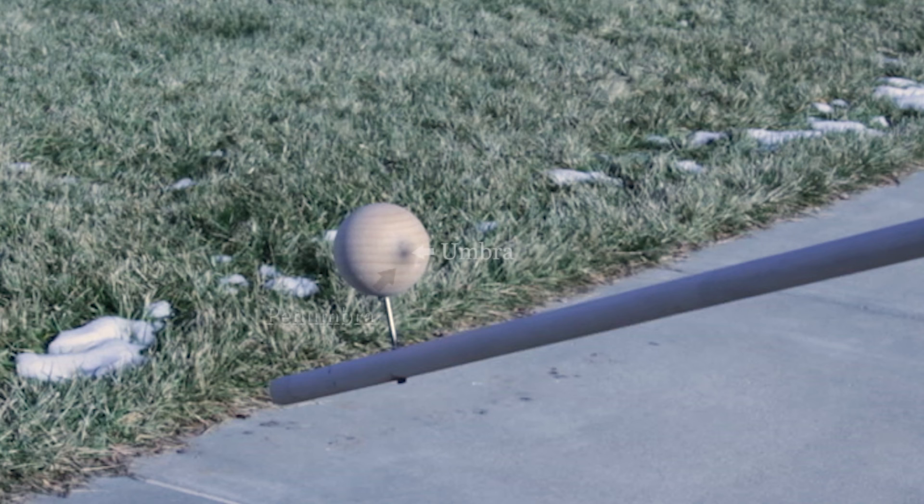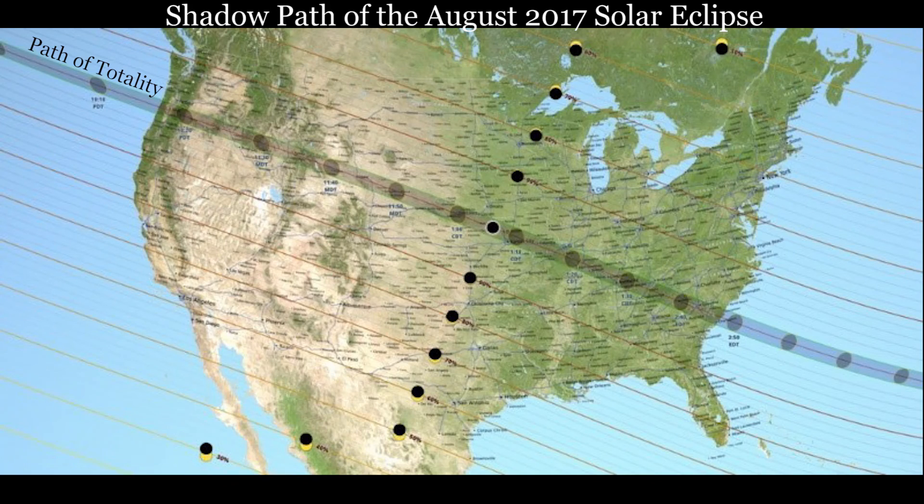Demonstrating a solar eclipse allows us to see that the shadow of the moon on the Earth is pretty small. Only those in the umbra of the moon's shadow, the gray swatch from Oregon to South Carolina, could see a total solar eclipse.